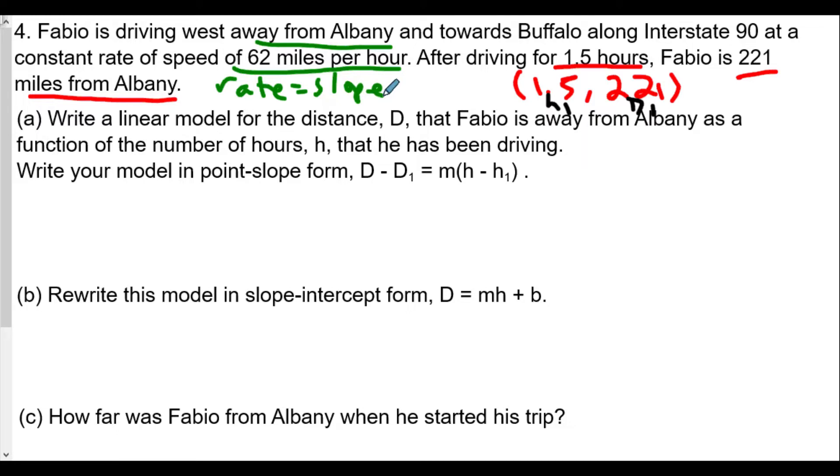In this question we see that we want to find out D, the distance that Fabio is away from Albany, so our slope is going to be 62 miles per hour. Therefore, filling this in we have D - 221 = 62(h - 1.5), and that's your first answer for letter A.